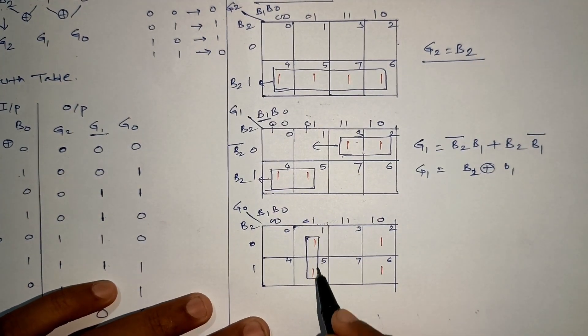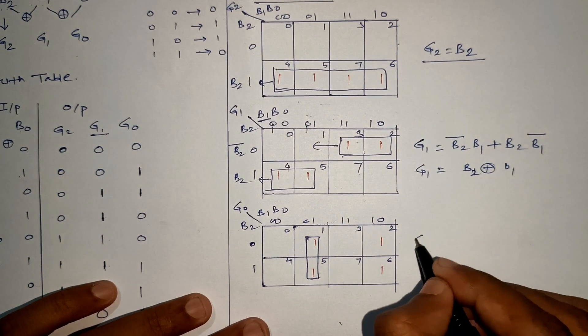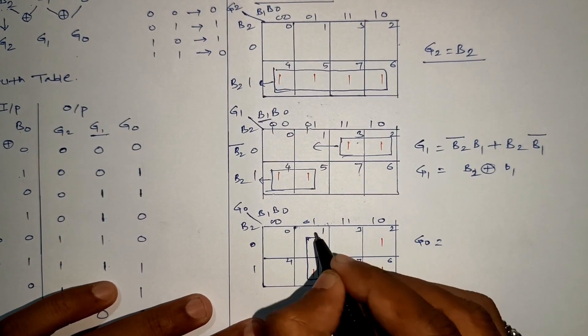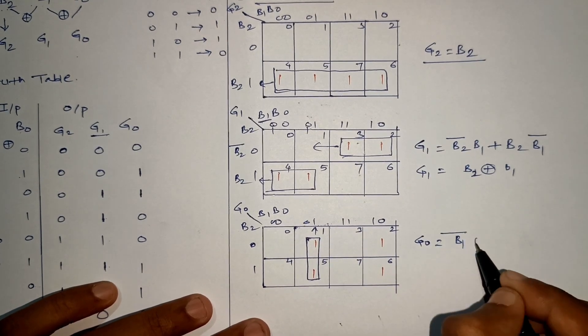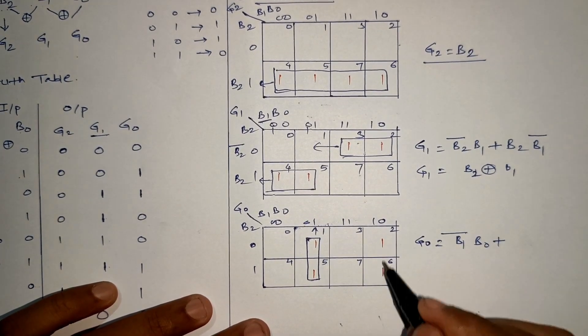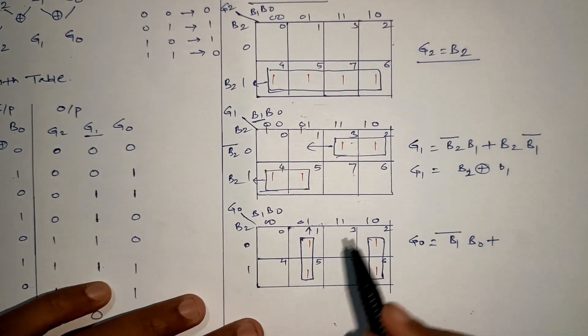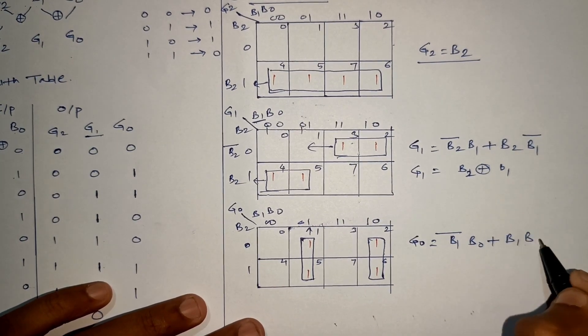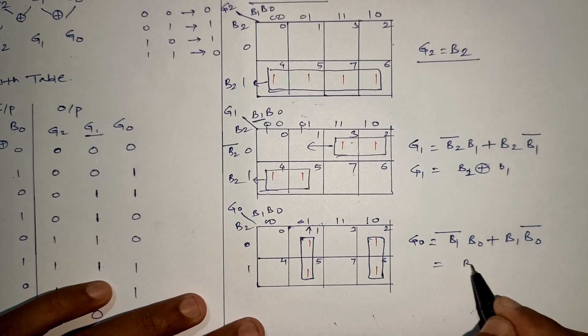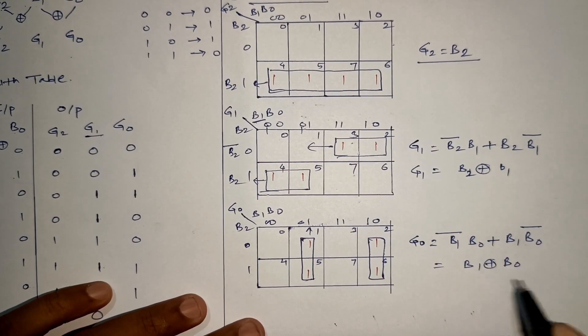So the expression will be: for 1, 5, this is vertical, so B1 bar B0, plus for 2, 6, the term is B1 B0 bar. You can write this again as an XOR gate, so you got B1 XOR with B0. That means we are getting the same terms in a reverse way.